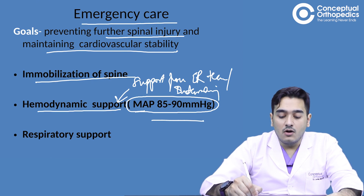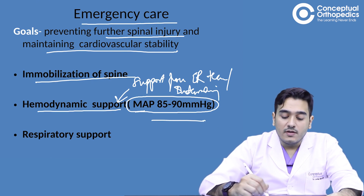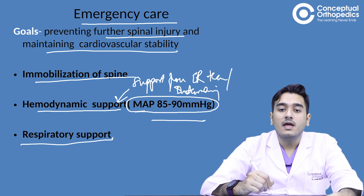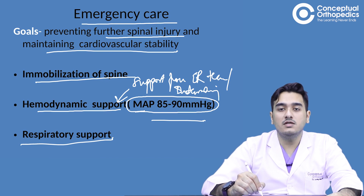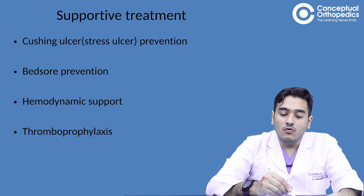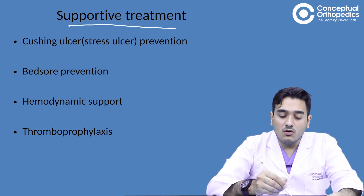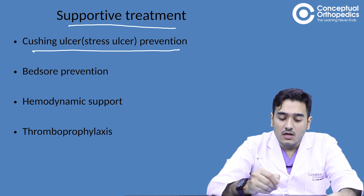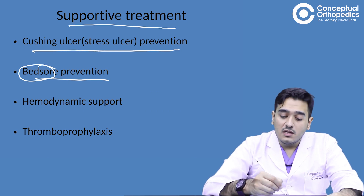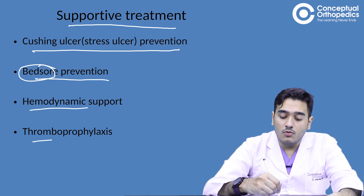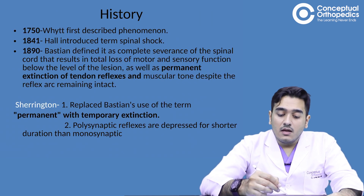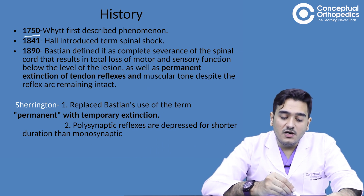Along with that, we must ensure respiratory support is present and the patient is not developing any form of respiratory failure. We also need to give gastroprotective treatment to prevent stress-related ulcers, begin bed sore prevention immediately from the ER, provide hemodynamic support, and initiate thromboprophylaxis.